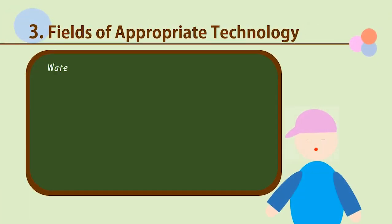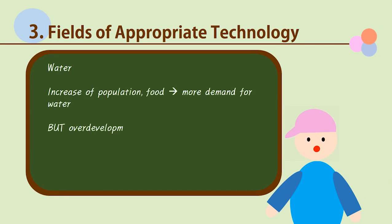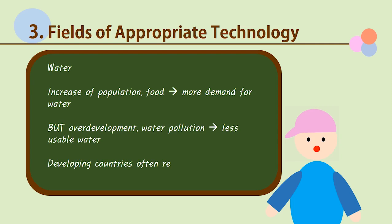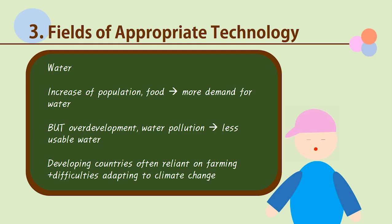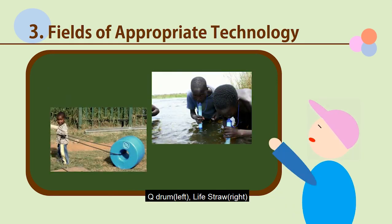Now, let's look at the various fields in which Appropriate Technology is being incorporated. The first is water. With rapid population increase and the ensuing increase of demand for food, demand for water has also been rising. However, with overdevelopment and water pollution, the amount of water resources available is steadily decreasing. In the case of developing countries, their primary source of income is often farming, and so the stable procurement of usable water has a big impact on the livelihoods of the people and the economic development of the nation. In addition, developing countries have more trouble adapting to climate change and are more susceptible to natural disasters. The Q-Drum and the life straw, which we both mentioned before, are examples of appropriate tech.